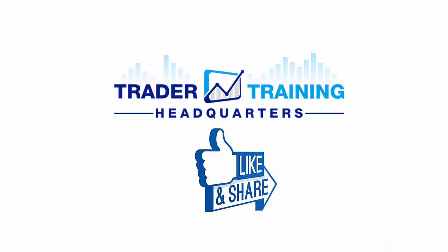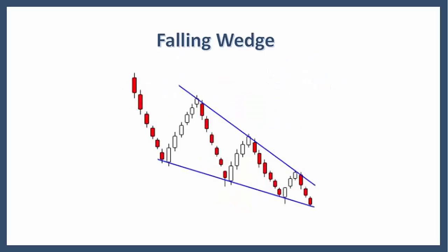The falling wedge is a bullish pattern that begins wide at the top and contracts as prices move lower. This price action forms a cone that slopes down as the reaction highs and the reaction lows converge.